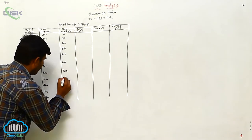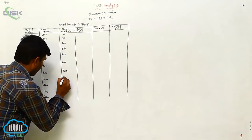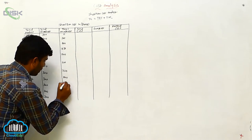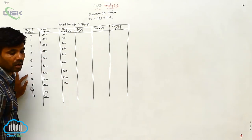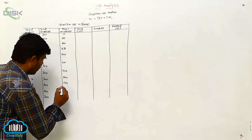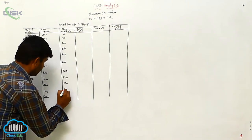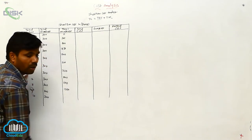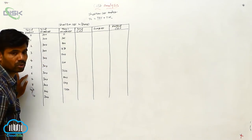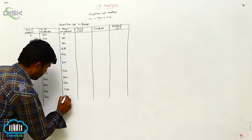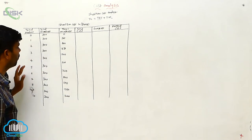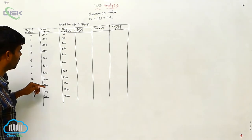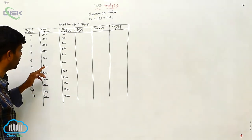Continuing the total variable cost values: 800, 1100, 1350, and 2000. We can see that total variable cost is fluctuating — it changes at different output levels while fixed cost never changes.